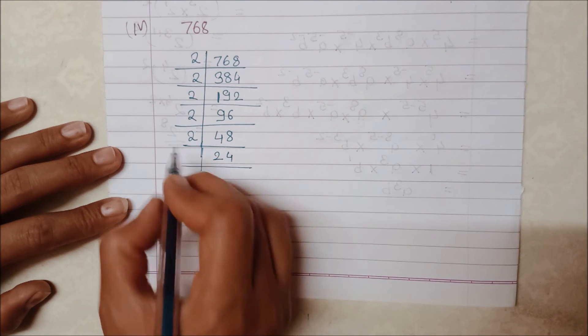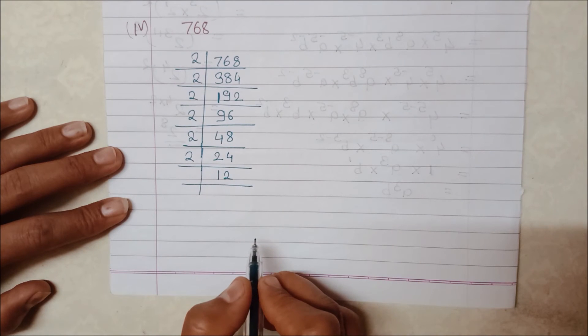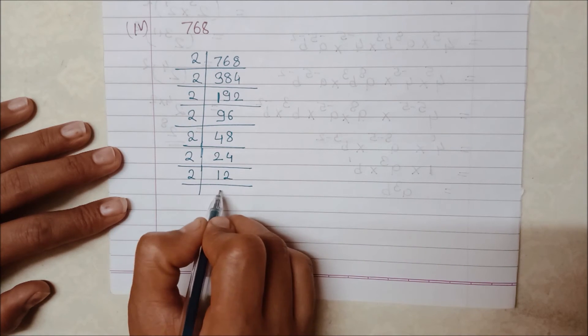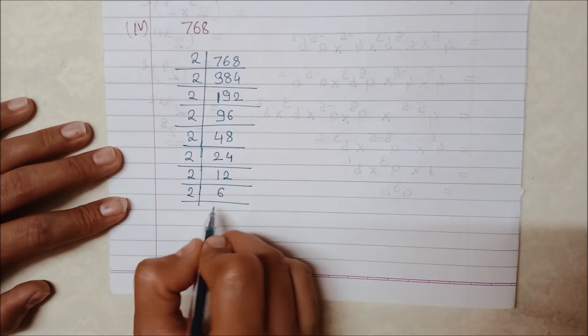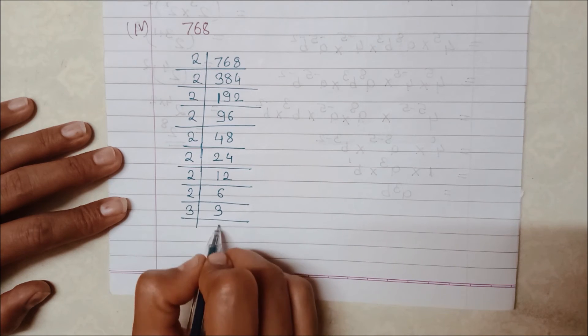24 is an even number, 2 divides it to give 12. 12 is an even number, 2 divides it to give 6. Again 6 is divided by 2 to get 3, and 3 is 3. Right.